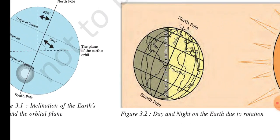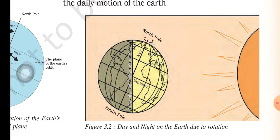Look at the image figure 3.2. There is an imaginary line which divides the earth into day and night — that is known as the circle of illumination. When the sun focuses on only half of the earth because of its spherical shape, that part is called day and the other part in darkness is called night.